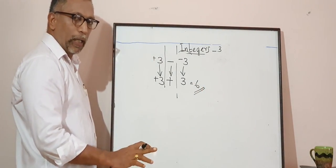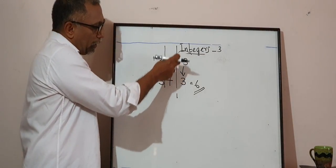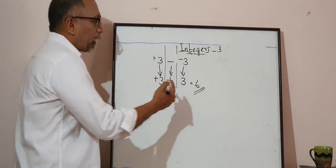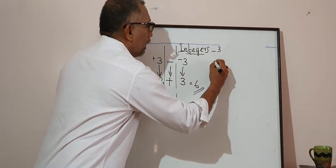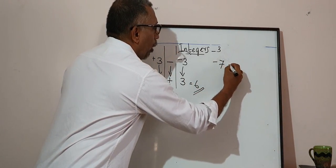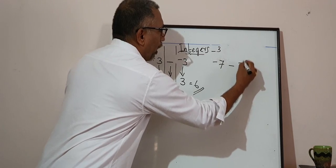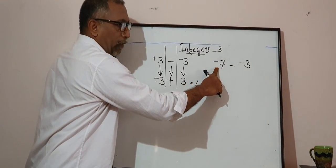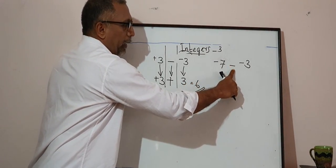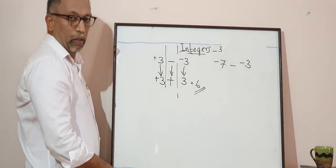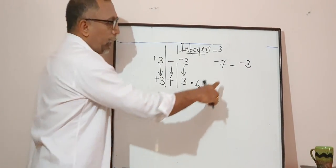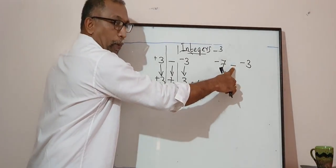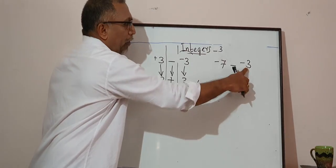So the only thing you need to do is change the subtraction question into an addition question. Let's take another example: negative 7 minus negative 3. You should not read it as 'minus minus 3' — it is negative 7 minus negative 3.